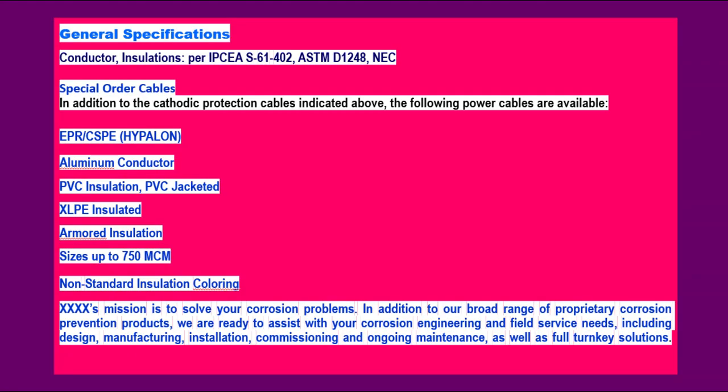General specifications for conductor insulations are per IPCEA S61402, ASTM D1248, and EZ standards. Special order cables available include: EPR/CSPE (Hypalon), aluminum conductor, PVC insulation, PVC jacketed, XLPE insulated, armored insulation, sizes up to 750 MCM, and non-standard insulation coloring. The manufacturer's mission is to solve corrosion problems; they are ready to assist with corrosion engineering and field service needs including design, manufacturing, installation, commissioning, ongoing maintenance, and full turnkey solutions.